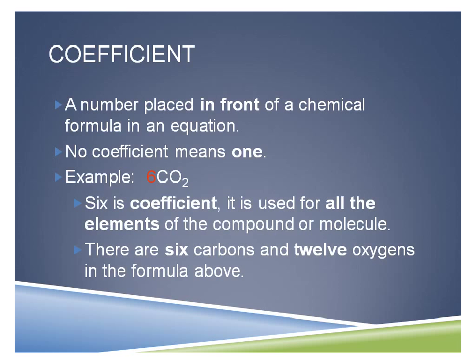A coefficient is a word you've heard before in math class. When you're talking about variables, if you have a number in front of a variable, it basically means to multiply by that number. The same idea is translated here: if I have a number placed in front of a chemical formula or symbol in an equation, this means I'm multiplying that formula by that number. If I don't have one, it just implies there is one of them. So in this example, I've got 6CO₂ — six carbon dioxide molecules. Six is the coefficient, and because it's in front of everything, it gets applied to all elements in the compound.